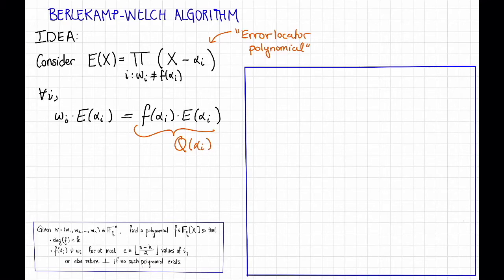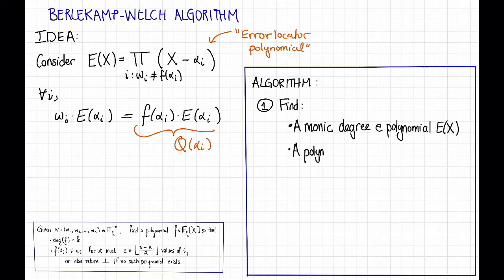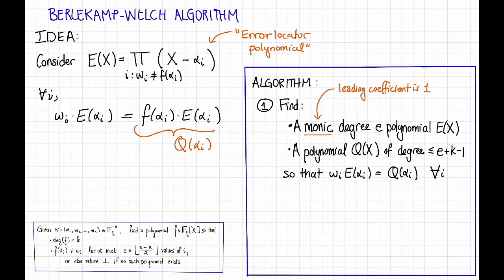The idea of the Berlekamp-Welch algorithm is to find a polynomial Q and find a polynomial E so that this condition is satisfied, and then we're just going to divide Q by E and hope we end up with f. More precisely, here's the algorithm. Step one: find a monic degree-e polynomial E(x) — monic just means that the leading coefficient is 1 — and also a polynomial Q(x) of degree at most e plus k minus 1, so that wi times E(αi) equals Q(αi) for all i. We'll call all these conditions star. If such polynomials don't exist, we return ⊥.